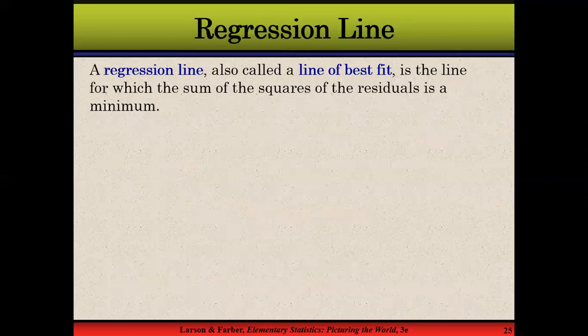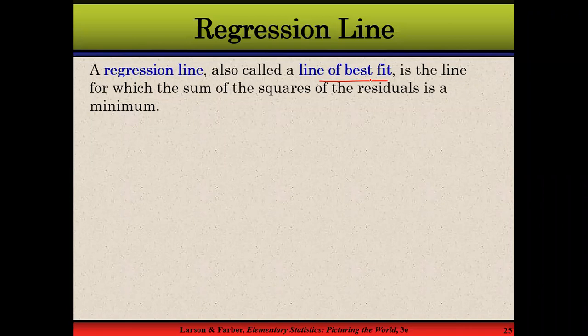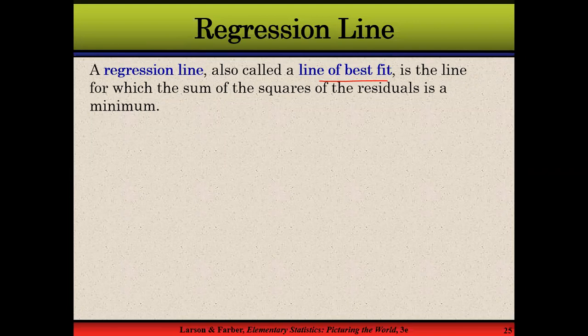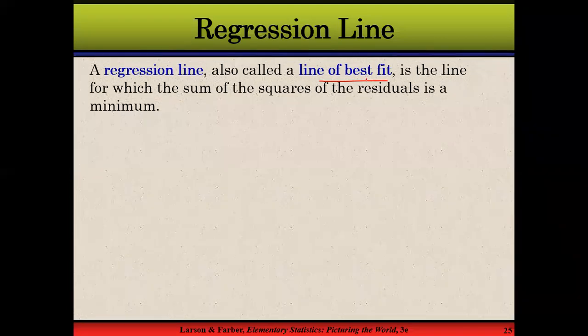So a regression line is also called a line of best fit, as I told you. Why a line of best fit? Because these are the perfectly predicted values that show a linear relationship, a perfect linear relationship between two variables. If you're not talking to me, please turn off your mic so you don't disturb other people.